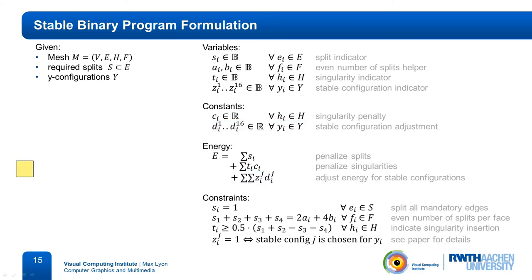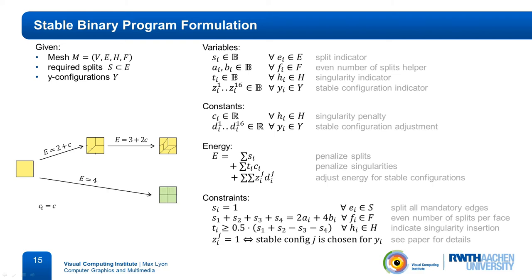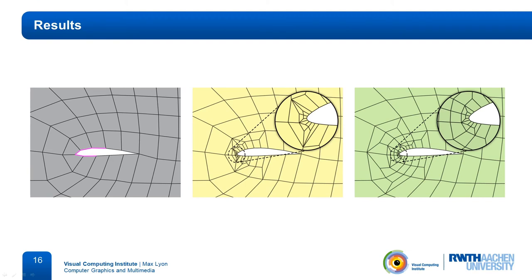With the help of these indicators, the energy is adjusted to compensate for the different patterns being used. Let's consider the first example with a constant penalty c. Creating the Y-configuration in the first iteration had a cost of 2 for the two split edges plus c for the inserted singularity. In our original formulation, splitting the three marked edges has a cost of 3 for the split edges plus 2c for the two inserted Y-configurations. Had we split all four edges in the first iteration, the regular 1-to-4 split would have created an energy of 4. Using the adjustment term D, we set it to the cost of the direct path and subtract the cost of the other two operations.